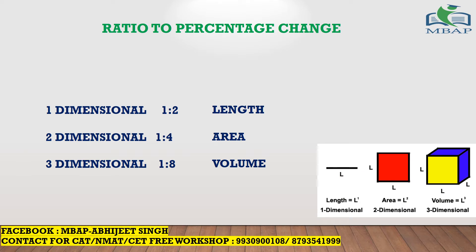Everyone knows what ratio and percentage are. For example, what is the value of one by five? Everyone knows the value is 20 percent. So one by five is a ratio and 20 is the percentage change of one on five. That's the small application which will help you solve all the difficult geometry questions of your CAT exam.